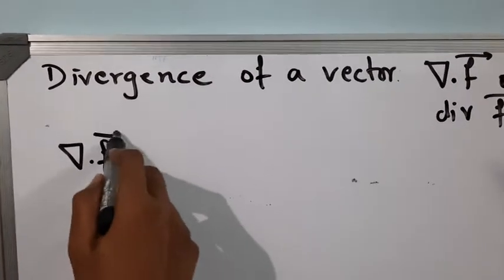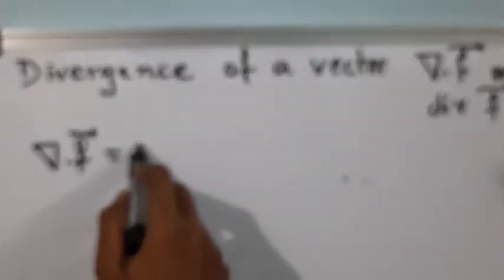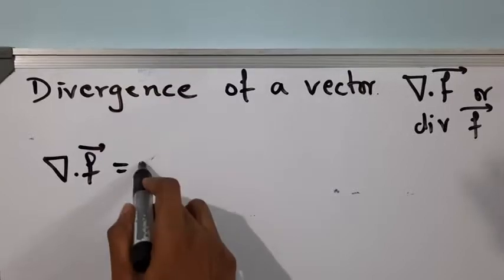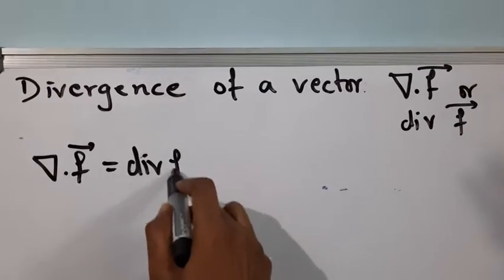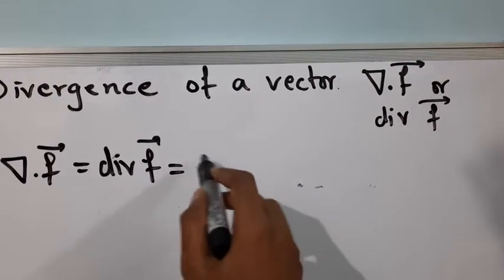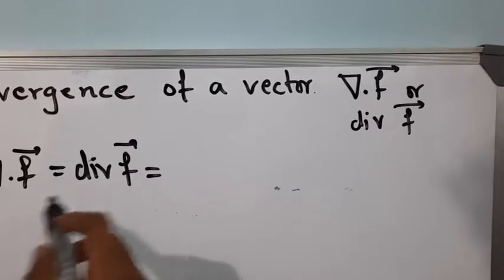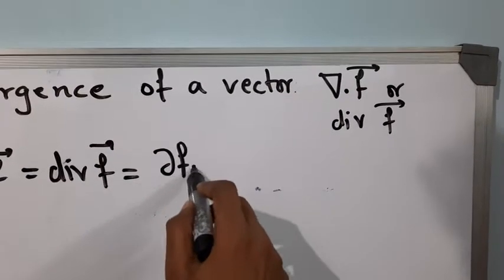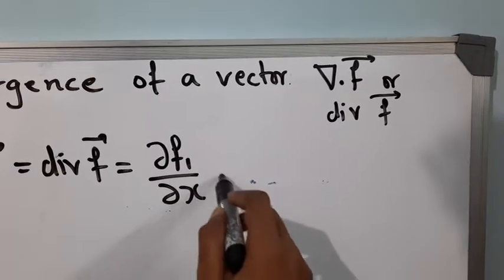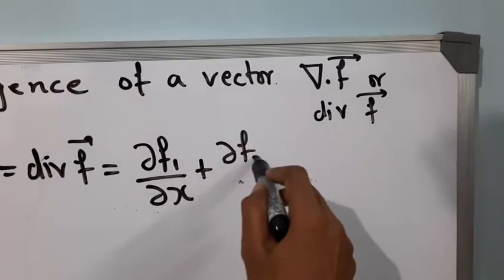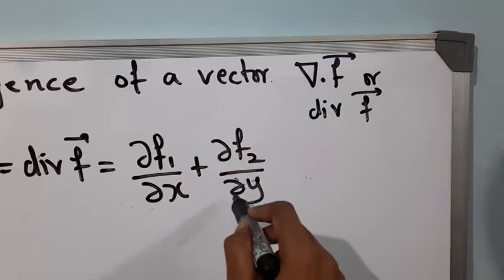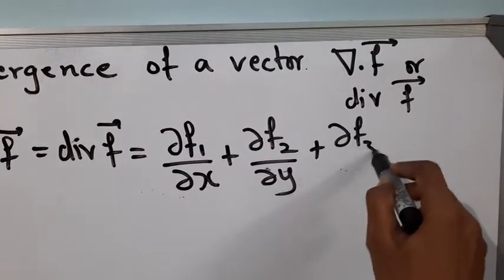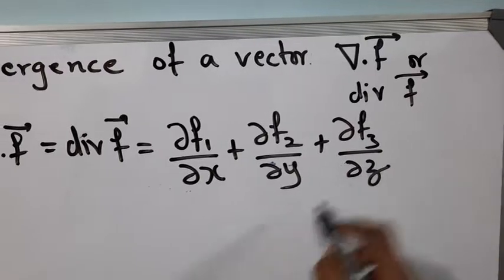Divergence of f is defined as: dou f1 by dou x plus dou f2 by dou y plus dou f3 by dou z.